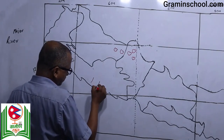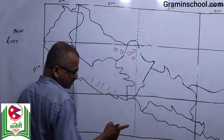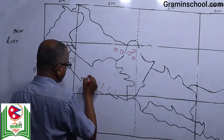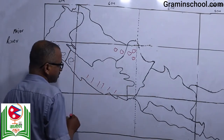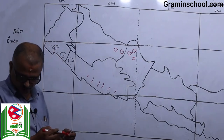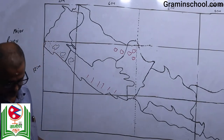Sugarcane is also grown in Bara, Parsa, and Sunsari. There are more areas, but this is the major sugarcane cultivation area.